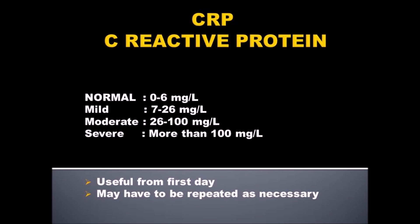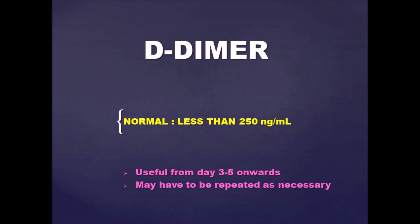Second in line is the CRP, or C-reactive protein. This is an acute phase protein released in the body within the first six to eight hours of any infection. A level below 26 indicates mild infection; 26 to 100 indicates moderate; and above 100 indicates severe infection.